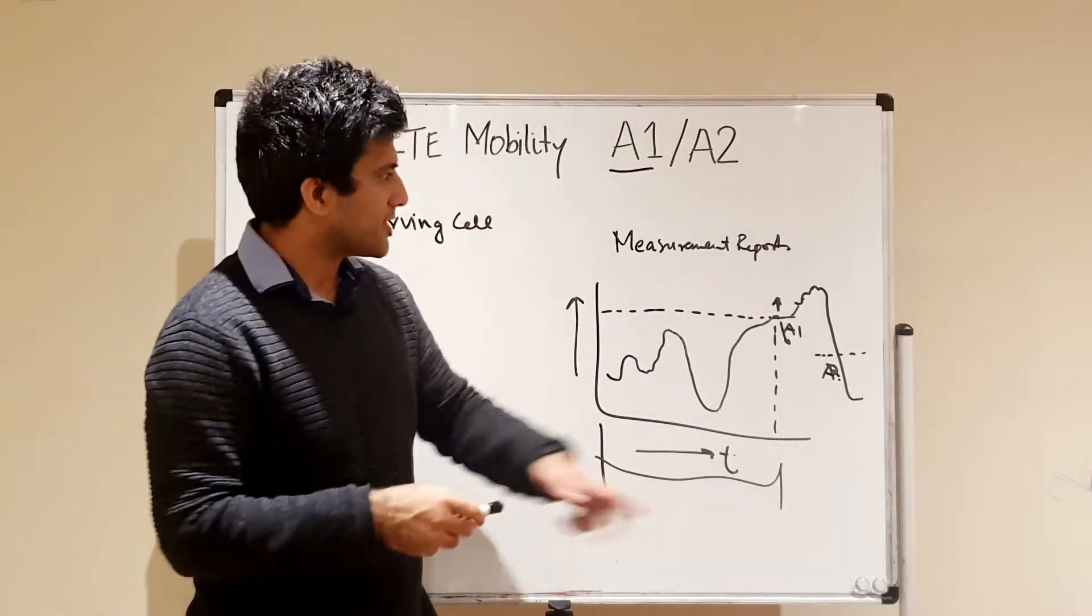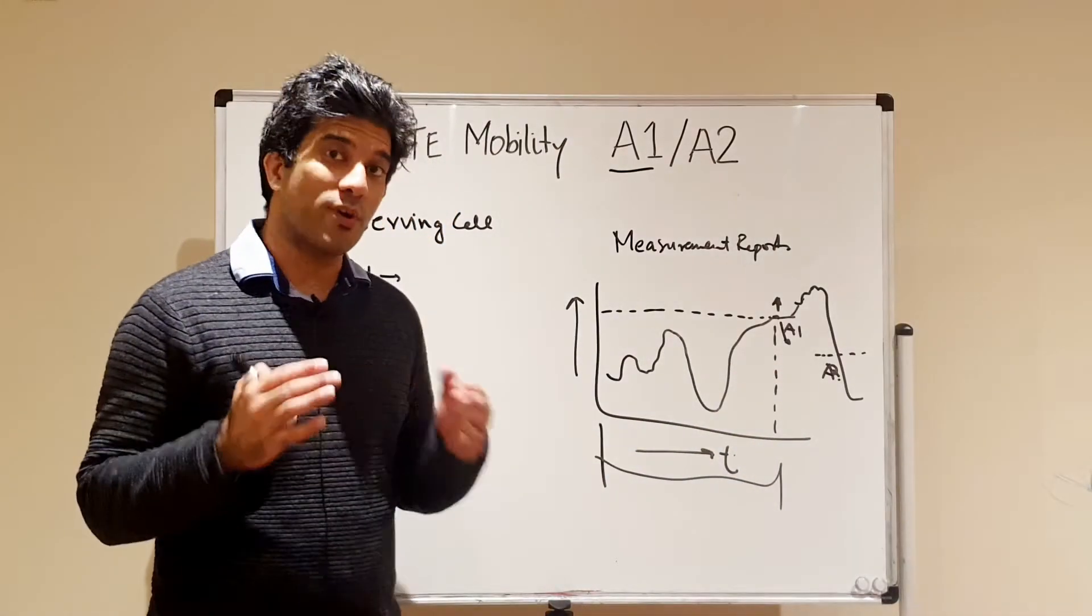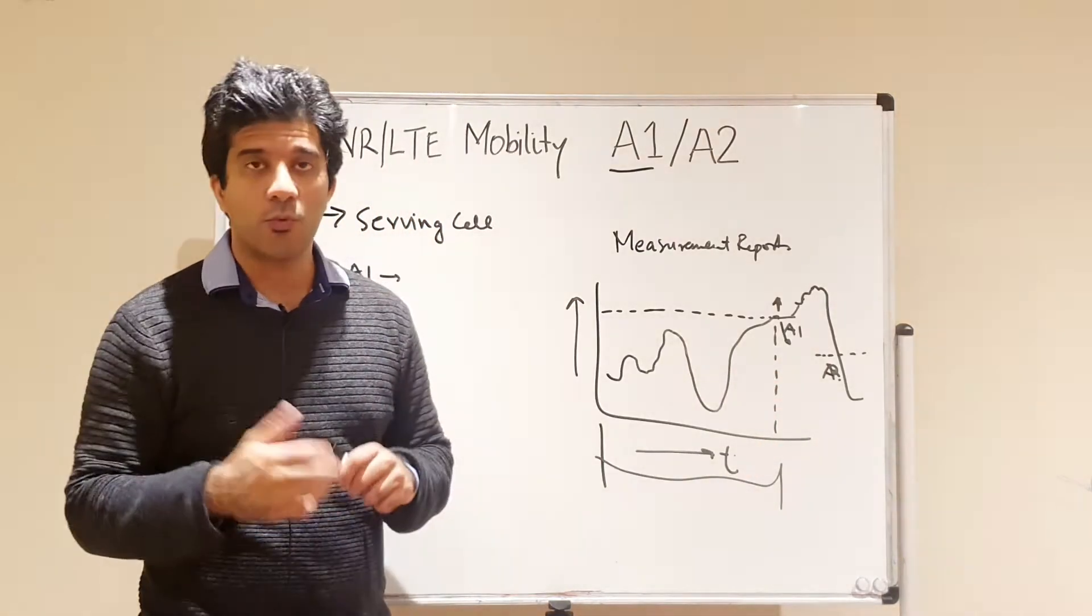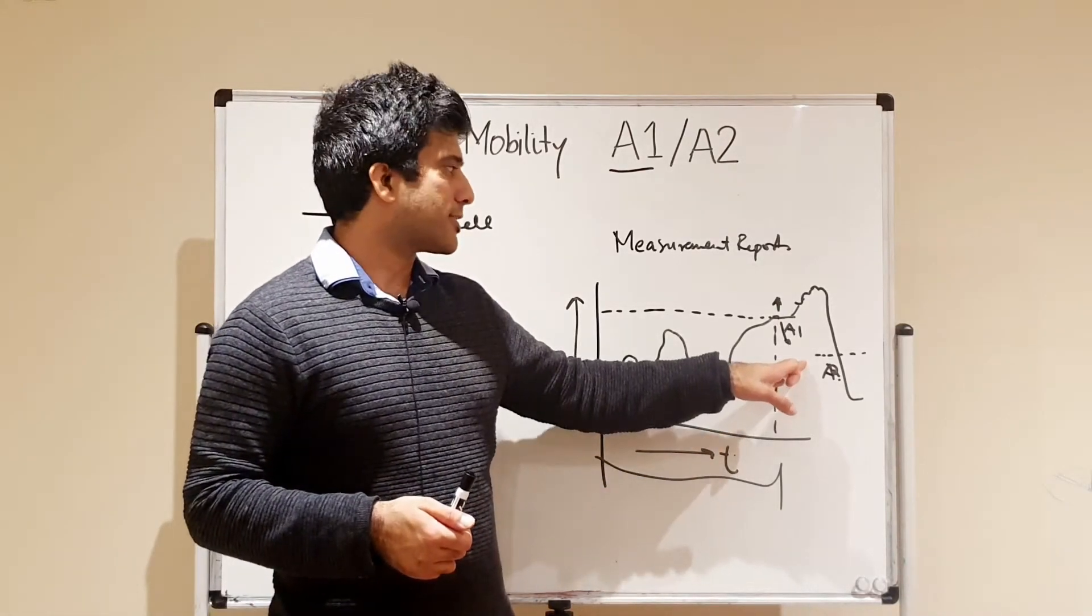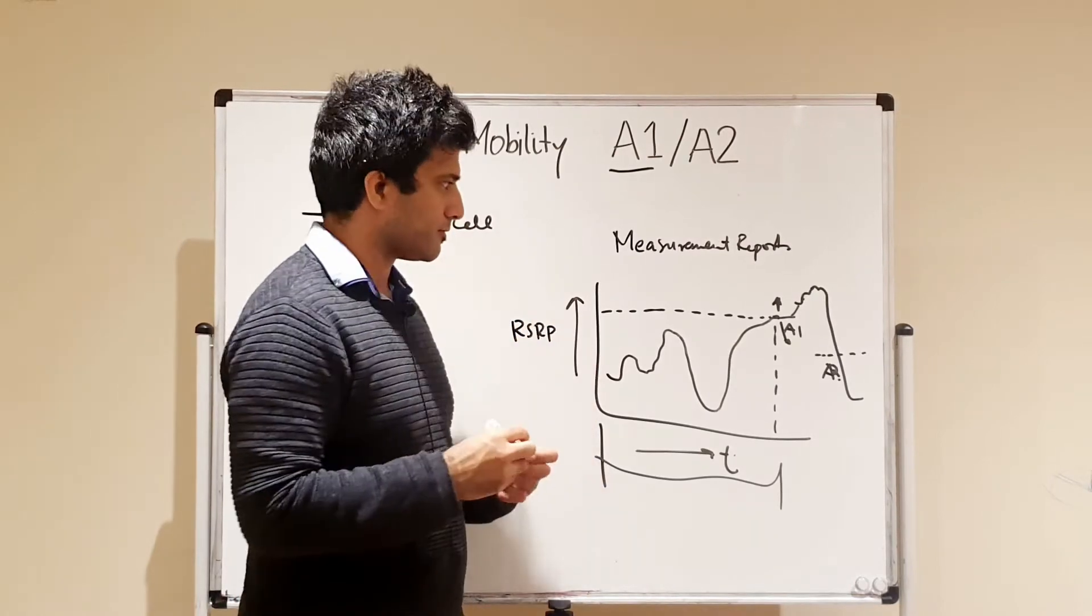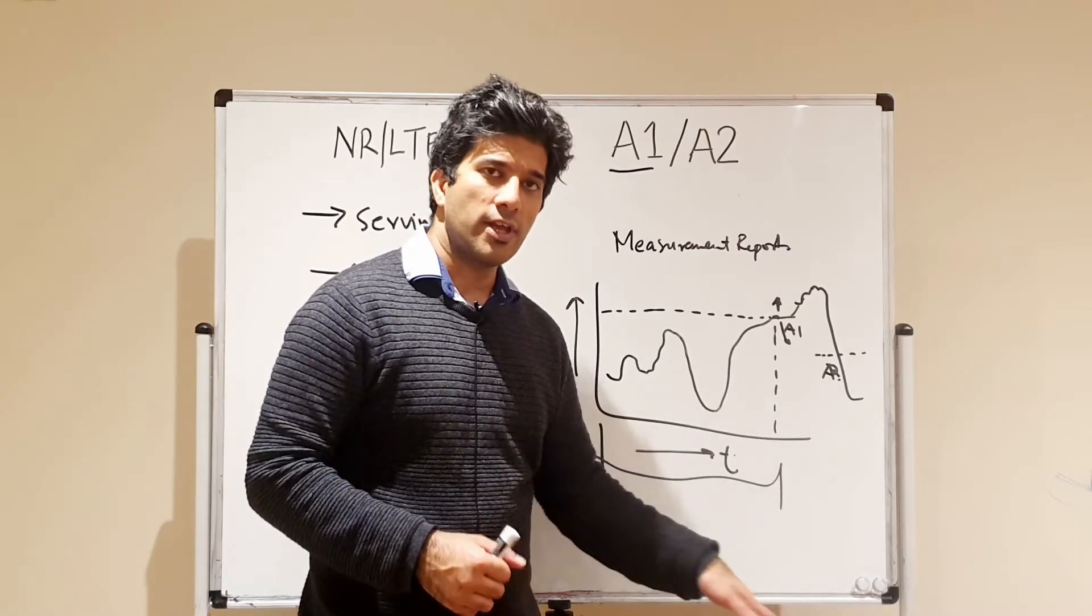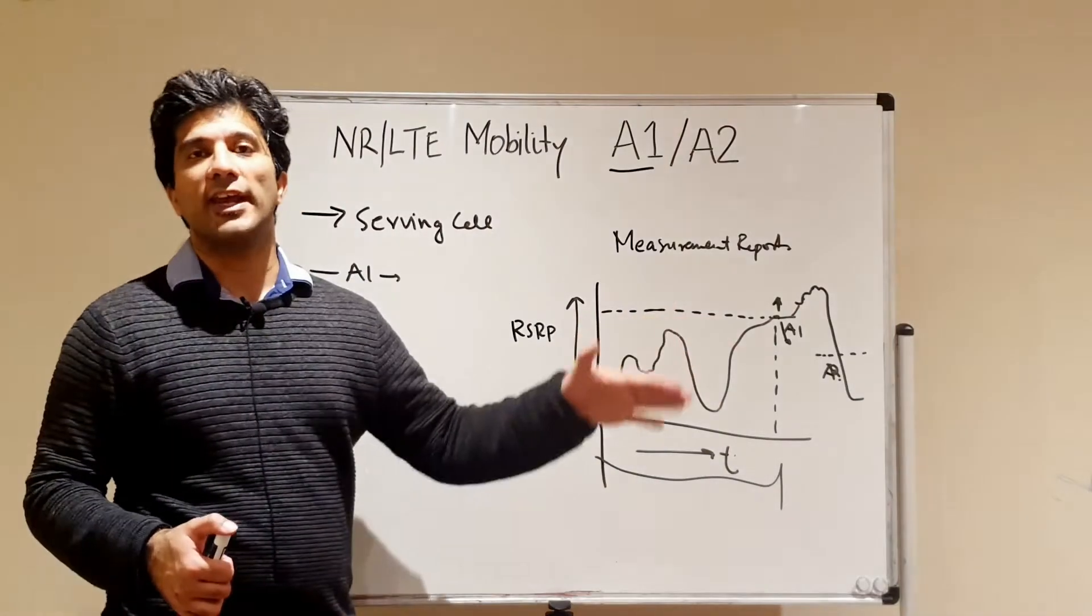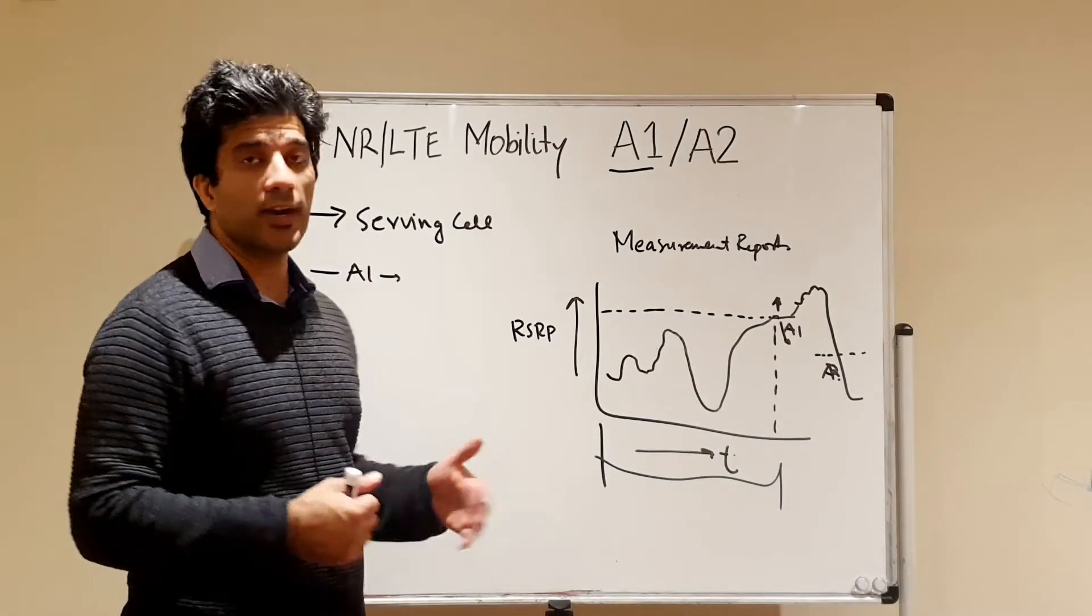So what happens is A2 is the threshold when your serving becomes worse than the threshold. So A2 is basically when your measurement reports will be triggered. As soon as your serving cell, and this is RSRP, as soon it goes below A2, the measurement reports will again be triggered. So the setting up of A1 and A2 will define how your MRs, your measurement reports, are triggered and how they are sent to the corresponding eNodeB.